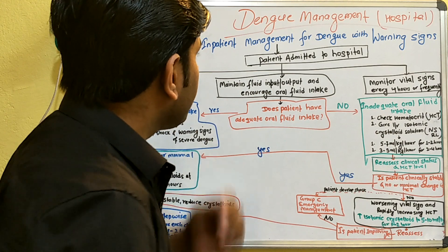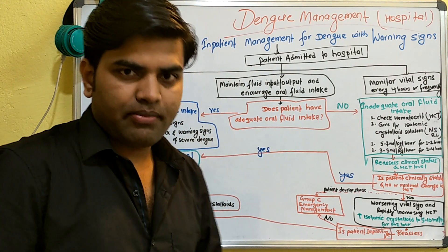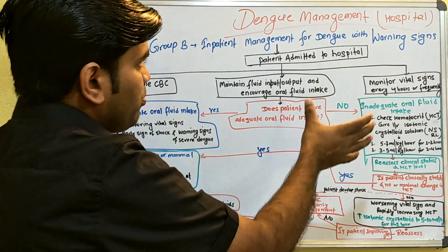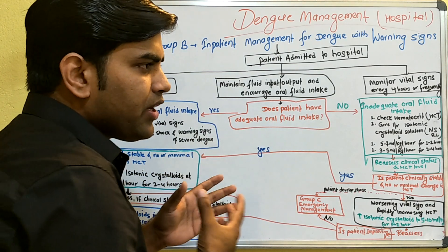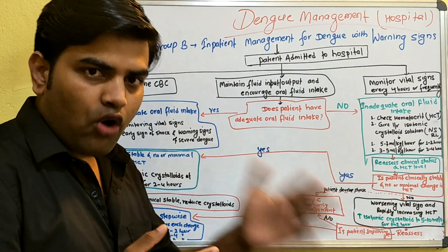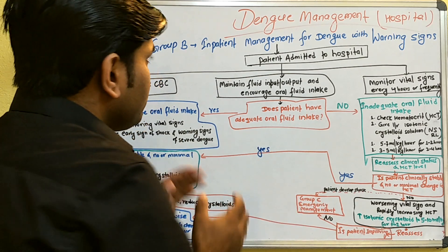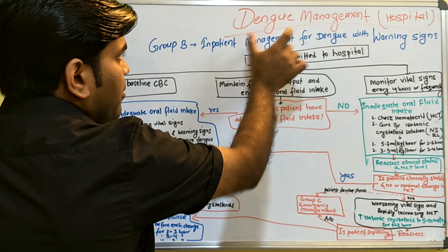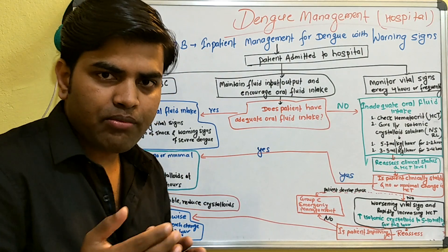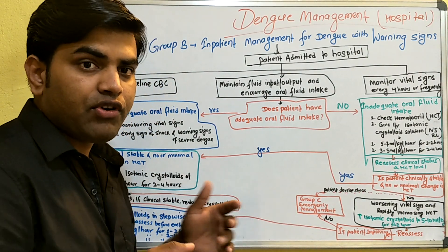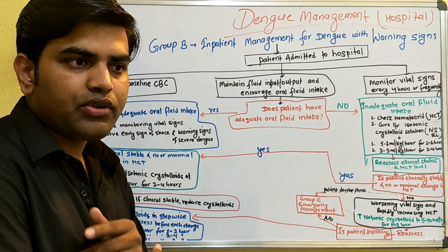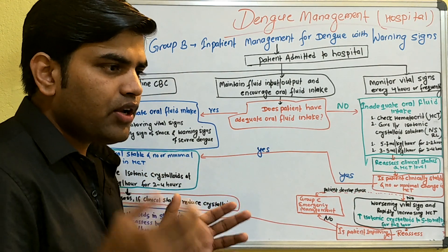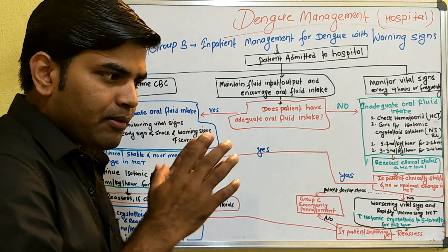Today we will be discussing dengue management. In the previous lecture, we discussed dengue management in the home — that is, the outpatient setting. Most dengue management patients you will manage in outpatient and in the home. About 99 percent of your cases will be managed in the outpatient setting.